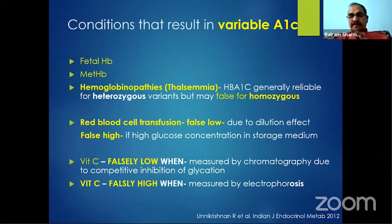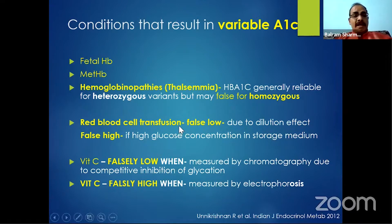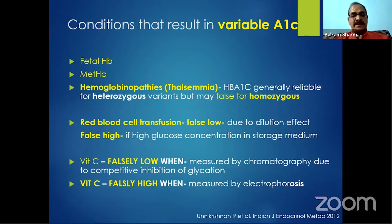Conditions with variable results — sometimes low, sometimes high — include fetal hemoglobin, methemoglobin, and hemoglobinopathies, particularly thalassemias. Homozygous variants may cause problems even in NGSP-certified labs, while heterozygous variants are generally reliable. Red blood cell transfusion can cause false low (dilutional effect from multiple units) or false high (if storage was in glucose-rich medium). Vitamin C can cause false low with chromatography methods or false high with electrophoresis methods.